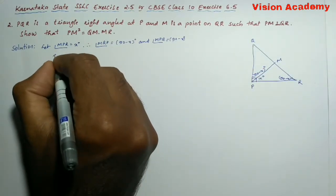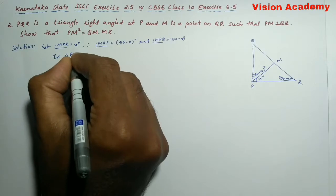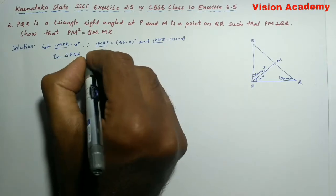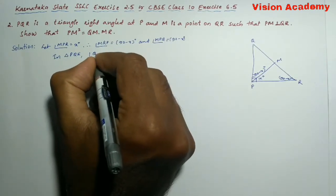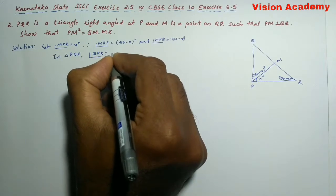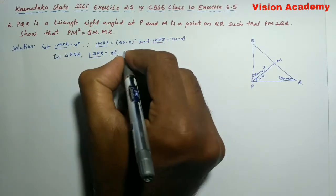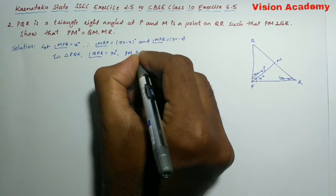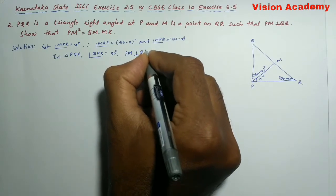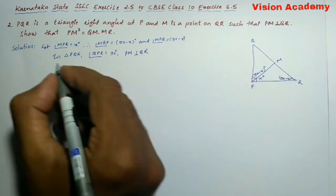In triangle PQR, angle QPR is equal to 90 degrees and PM is perpendicular to QR which is already given.